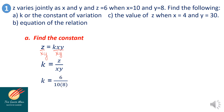Substituting the values, k is equal to 6 all over 10 times 8, which gives us 6 all over 80. Simplifying by dividing numerator and denominator by 2, k is equal to 3 all over 40.